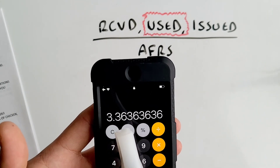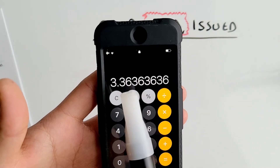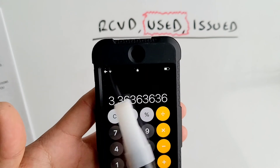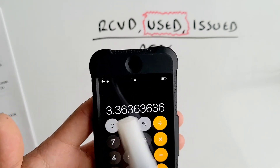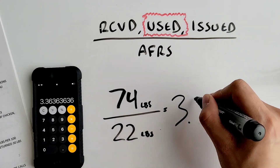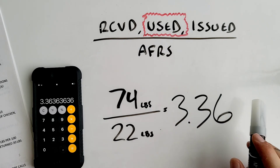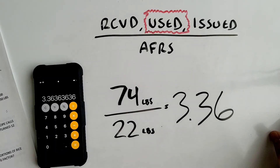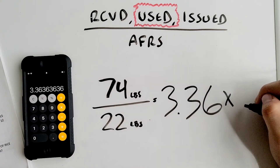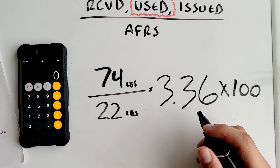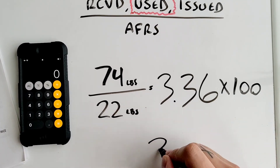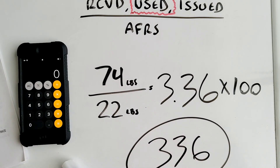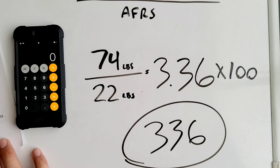We always round to the hundredths place — the two numbers after your decimal. If the third number is five or above, round up; if it's four or below, leave it. Since it's under four, we leave it, giving us 3.36. This is your working factor, but the question asks for new portions to prepare. Multiply the working factor by 100: that gives you 336 portions. With the 74 pounds used, you can make 336 portions of pork loin.